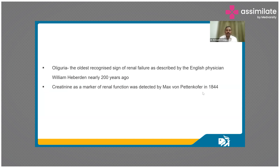Drop in urine output was recognized as a sign of kidney failure as early as 200 years ago by an English physician named William Haberdine — this was probably the first indication that urine is produced by the kidneys and that a drop in urine was attributed to a kidney problem. Then came serum creatinine as a marker of renal function. Nowadays everyone is aware of creatinine as an indicator of renal function, but it was first published by Max von Fotenkofer in 1844 as a marker of renal function.